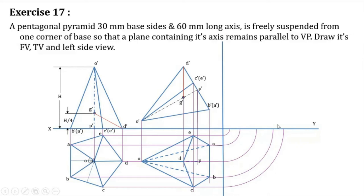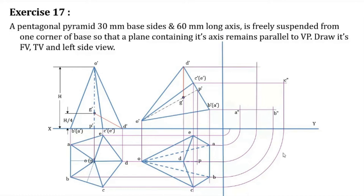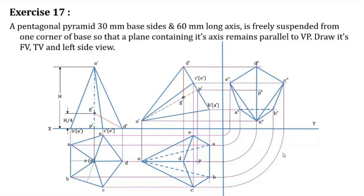All the arcs are drawn. From all the intersecting points we draw projectors. A double dash, B double dash, C double dash, E double dash are obtained. In the side view, only A double dash–B double dash will be the invisible line. All other edges will be visible.